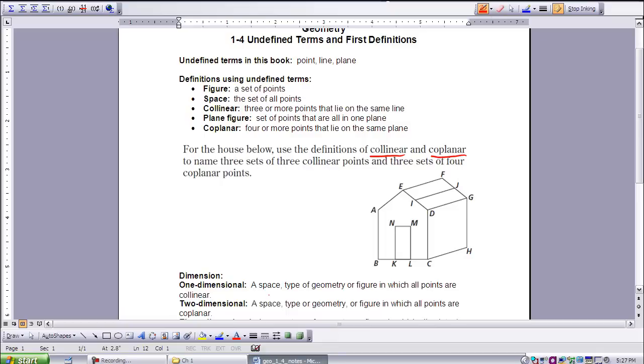So let's start by looking at collinear. If we look at the definition again, it's three or more points that lie in the same line. So looking at the house, I'd like you to try and identify three or more points that are lying on the same line. Take a moment to do that. When you are finished, start the video again.